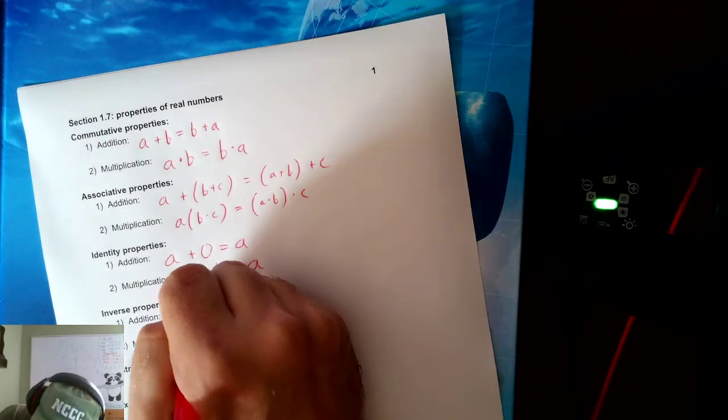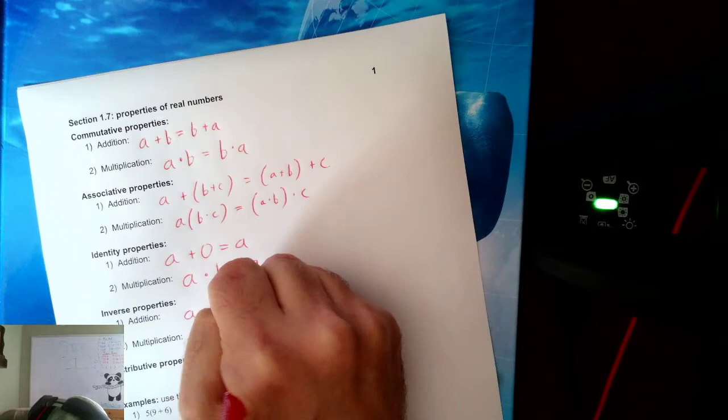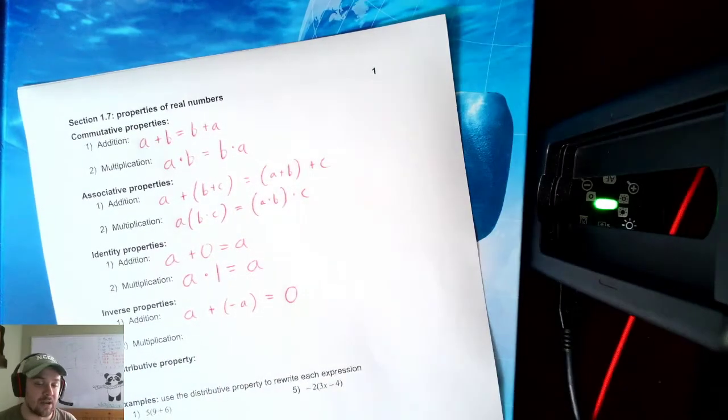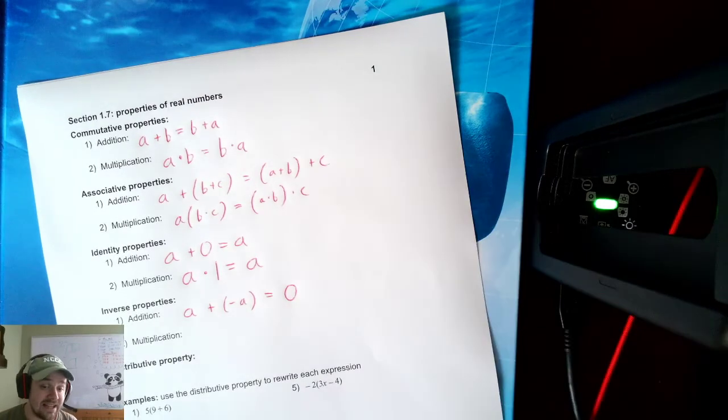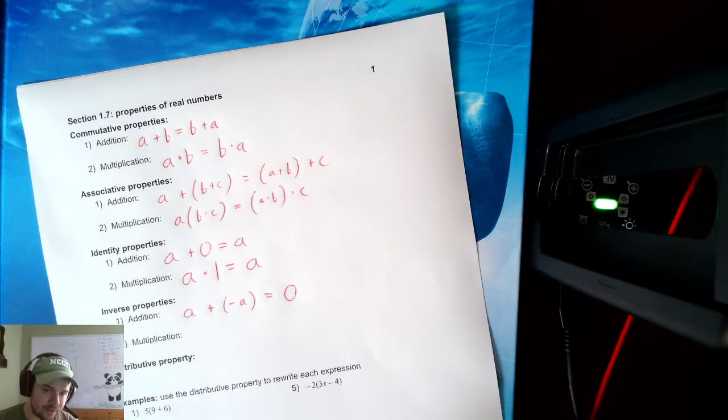Inverse. There's also inverses. If I want a and I want to cancel out a, I just add the negative version of that number. If I want to get rid of the number 5, adding negative 5 will get rid of it. I have an inverse.